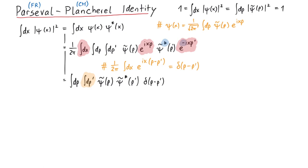This delta function makes it really easy to perform the integral over p' as well, so that only psi tilde and its complex conjugate remain, which we can combine to the absolute square of psi tilde. This means we successfully derived the Parseval-Plancherel identity.